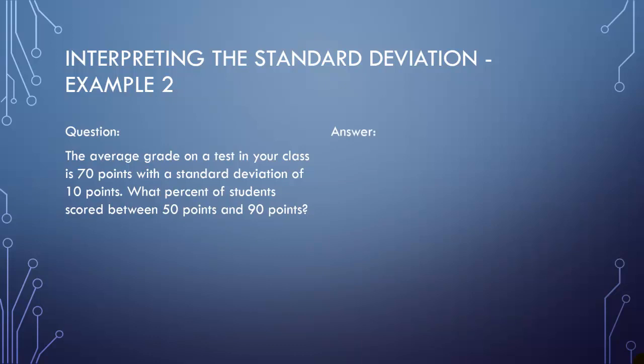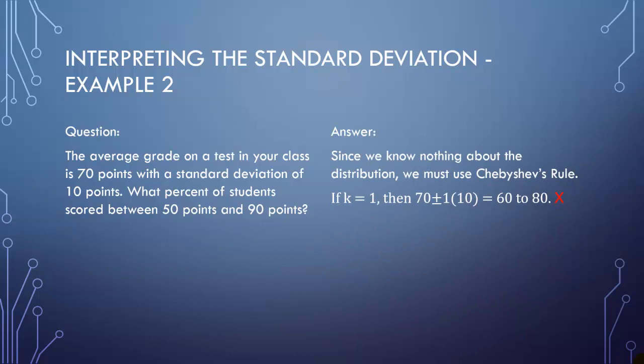So we have to figure out how many standard deviations away we are. So if k was 1, we would have 70 as the average, add and subtract one standard deviation, which is 10, on each side, and we get 60 to 80. Well, that's not right. So let's try two standard deviations. So if k is 2, going two standard deviations out, we would do 70 plus or minus 2 times 10. So 2 times 10 is 20. 70 plus or minus 20 gives you 50 to 90. That's what we want. So according to Chebyshev's theorem, at least 75% must fall within two standard deviations of mean, at least.